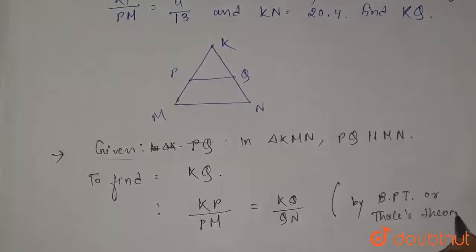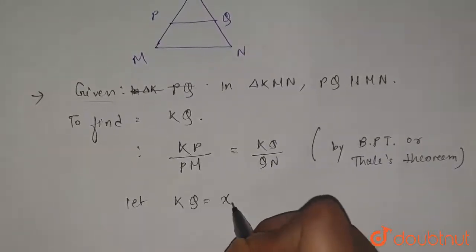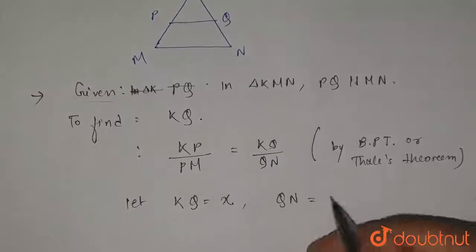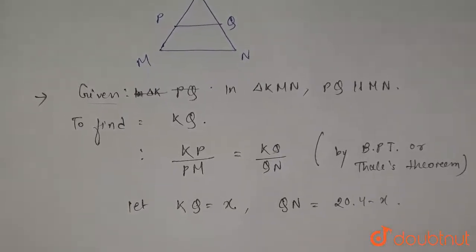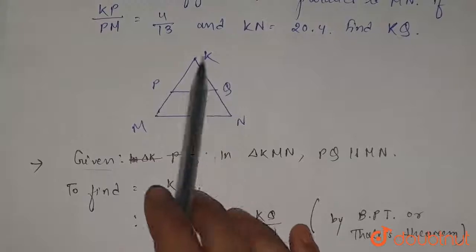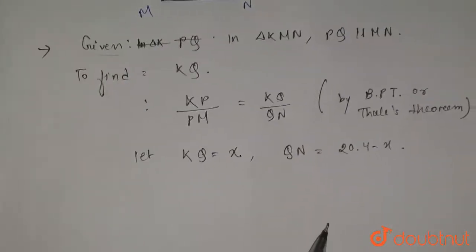Okay, now let KQ equals to x, and so QN will be equals to 20.4 minus x. Because this is KQ and this is KN, so QN will be equals to KN minus KQ, which is 20.4 minus x.